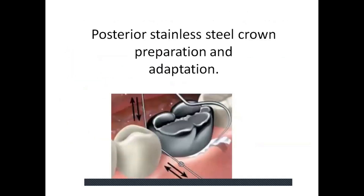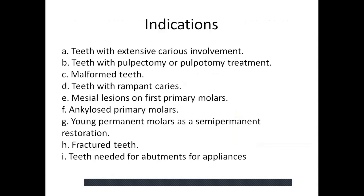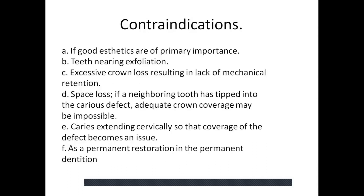The posterior stainless steel crown preparation and adaptation — there are certain indications and contraindications. Indications include: teeth with extensive carious involvement, teeth with pulpectomy or pulpotomy, malformed teeth, teeth with rampant caries, mesial lesion on the primary molars, ankylosed primary molars, young permanent molars, as a semi-permanent restoration, fractured teeth, and teeth needed as abutment for appliances. Contraindications are: if good aesthetics are of primary importance, teeth nearly exfoliating, excessive crown loss resulting in lack of mechanical retention, space loss where the neighboring tooth has tipped into the caries defect, caries extending cervically so that coverage of the defect becomes an issue, and as a permanent restoration in the permanent dentition.